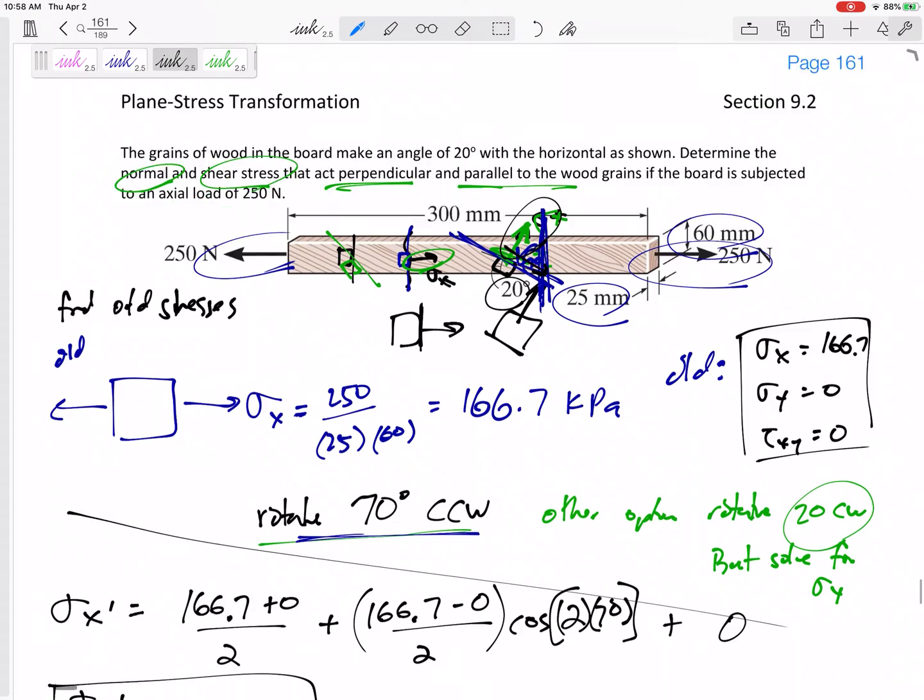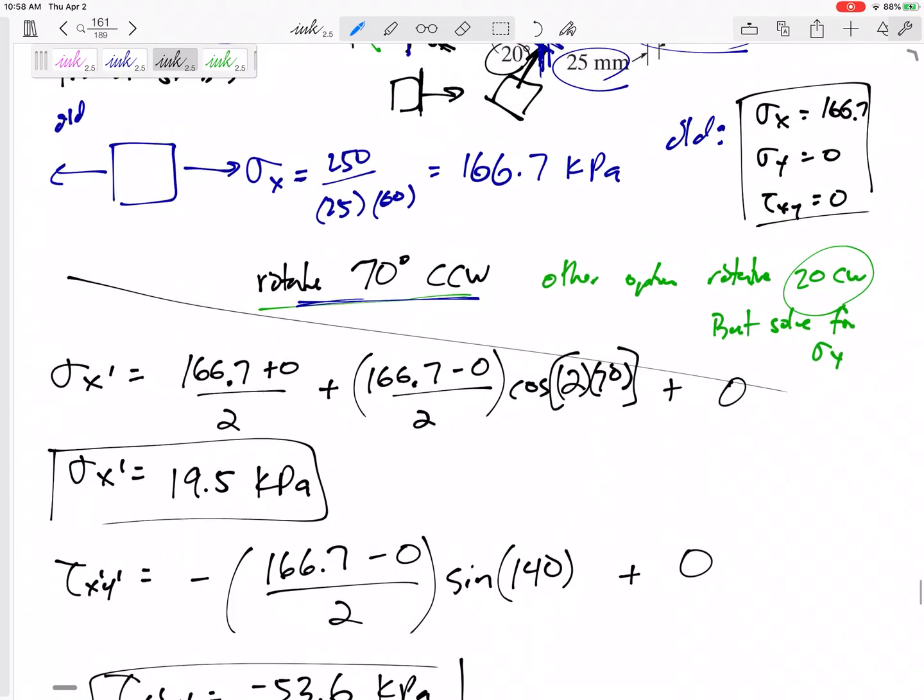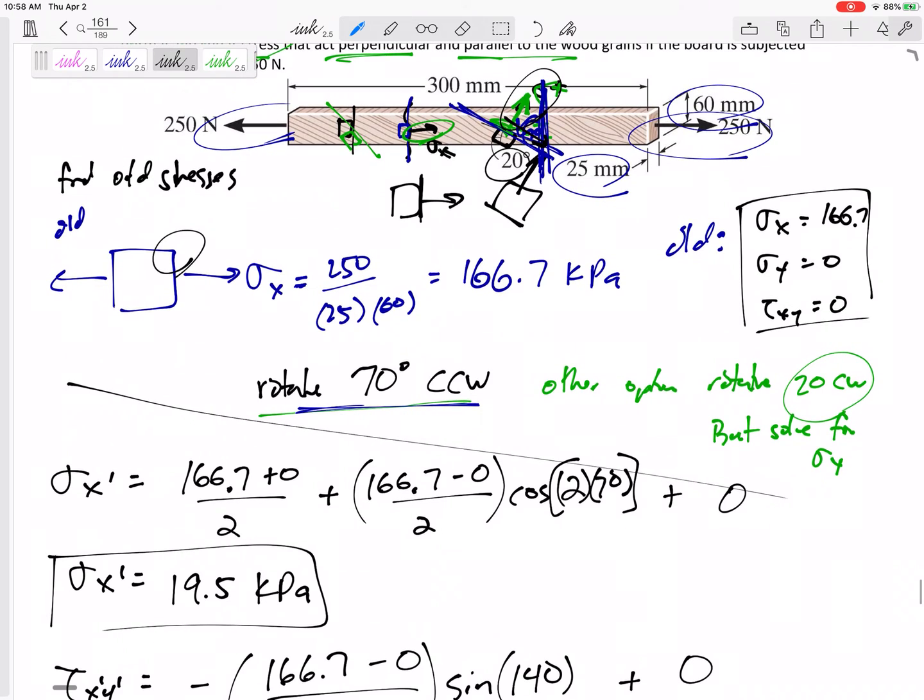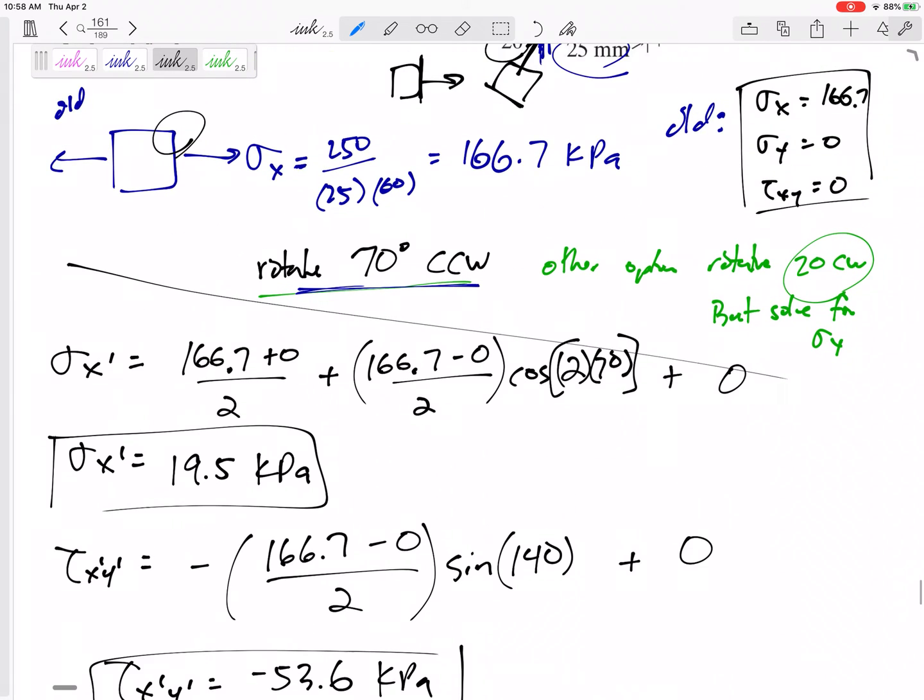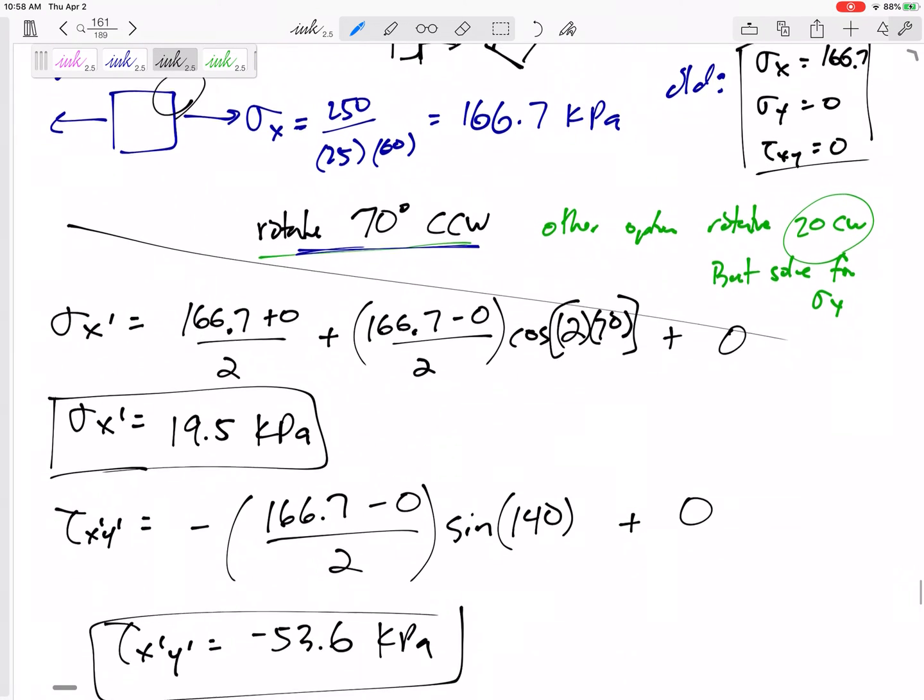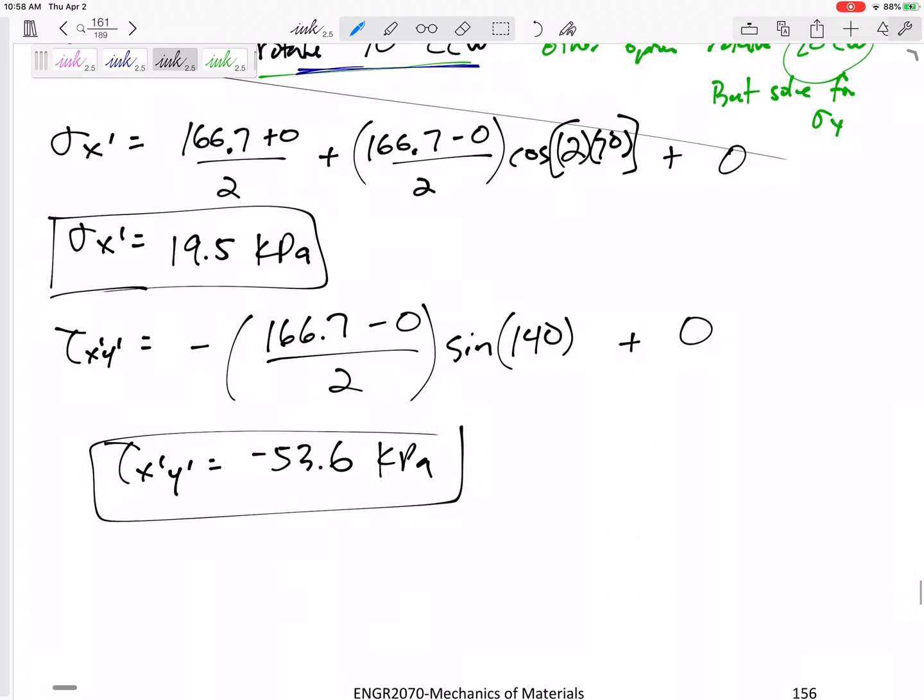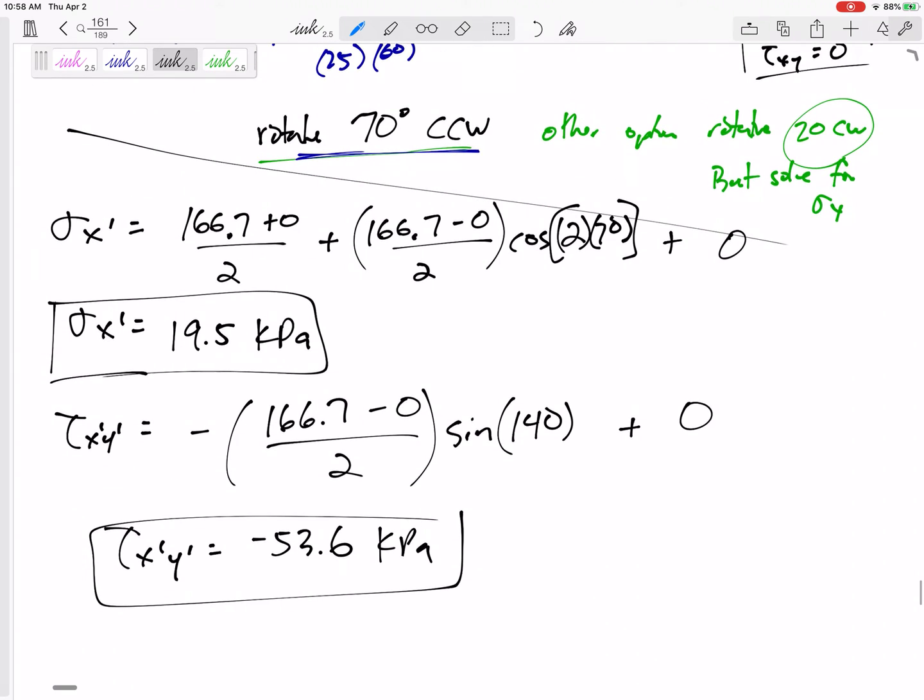So it is down that way, not pointed to this top right corner. Top right corner is up there now. So there we go. That's the new sigma X and tau X prime Y prime at the wood grain.